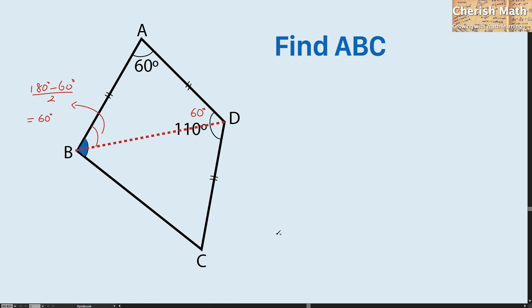By looking at triangle ABD, we can see this is an equilateral triangle because each angle is 60 degrees.